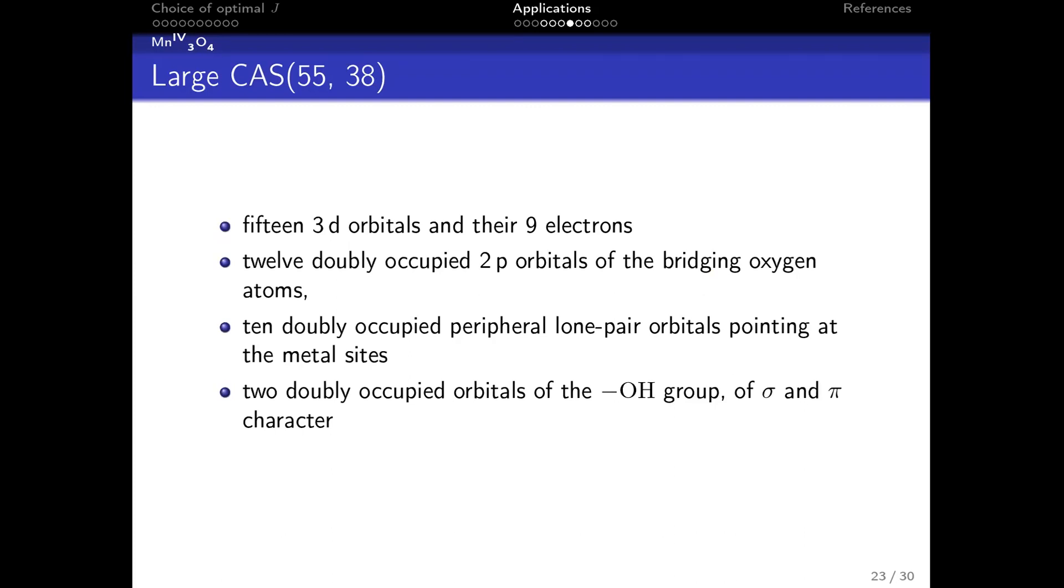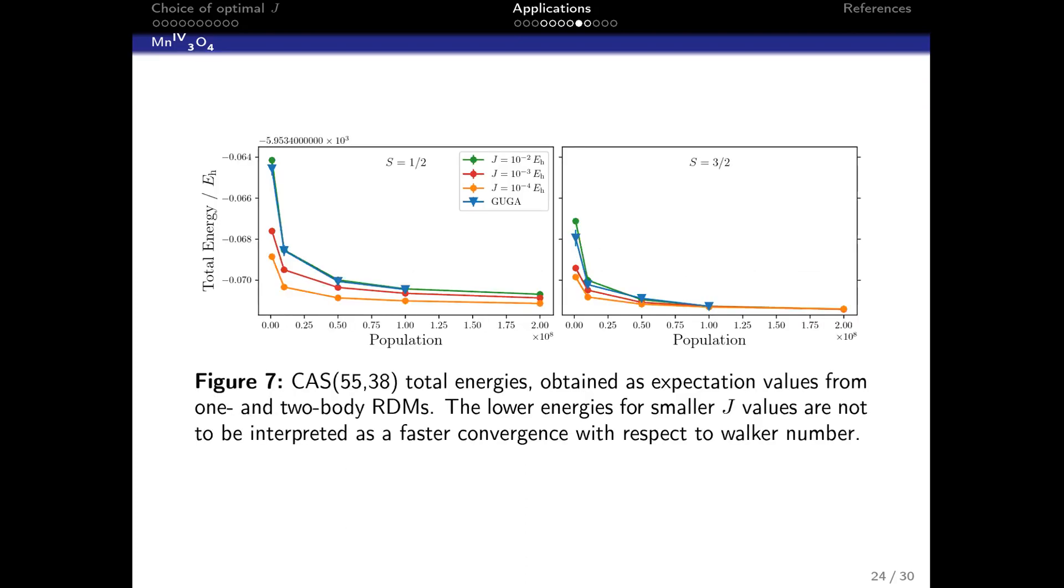That's what Giovanni already showed, so I won't go into detail. But you can see with J=0 you converge to the wrong spin state if you want to go to the low spin state. Then if you do the large CAS(55,38), here we concentrated on the doublet and quartet spin states.